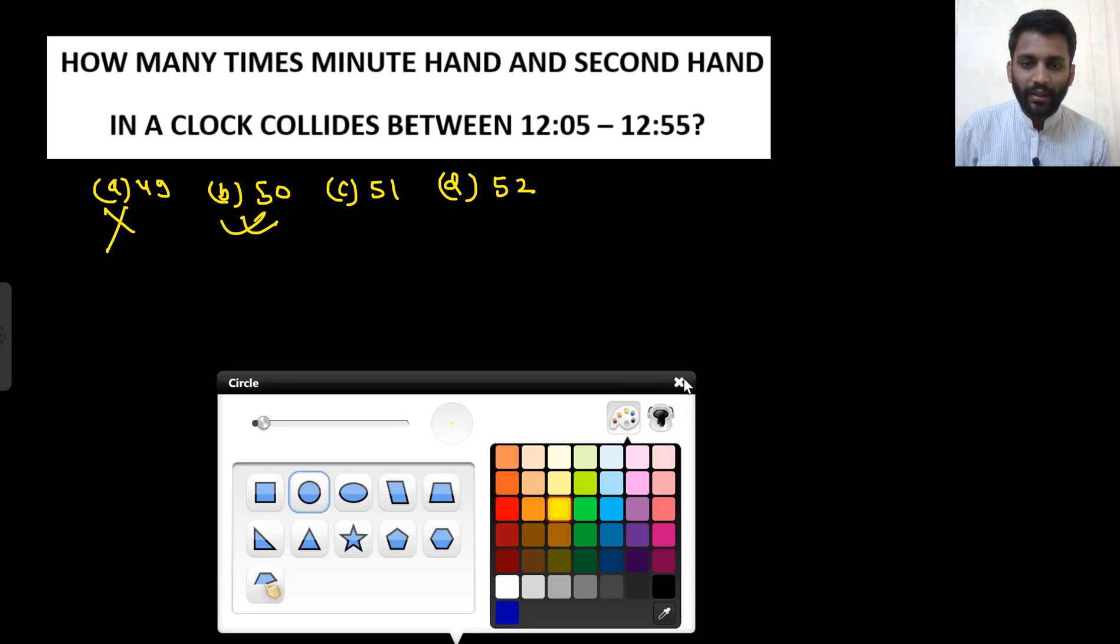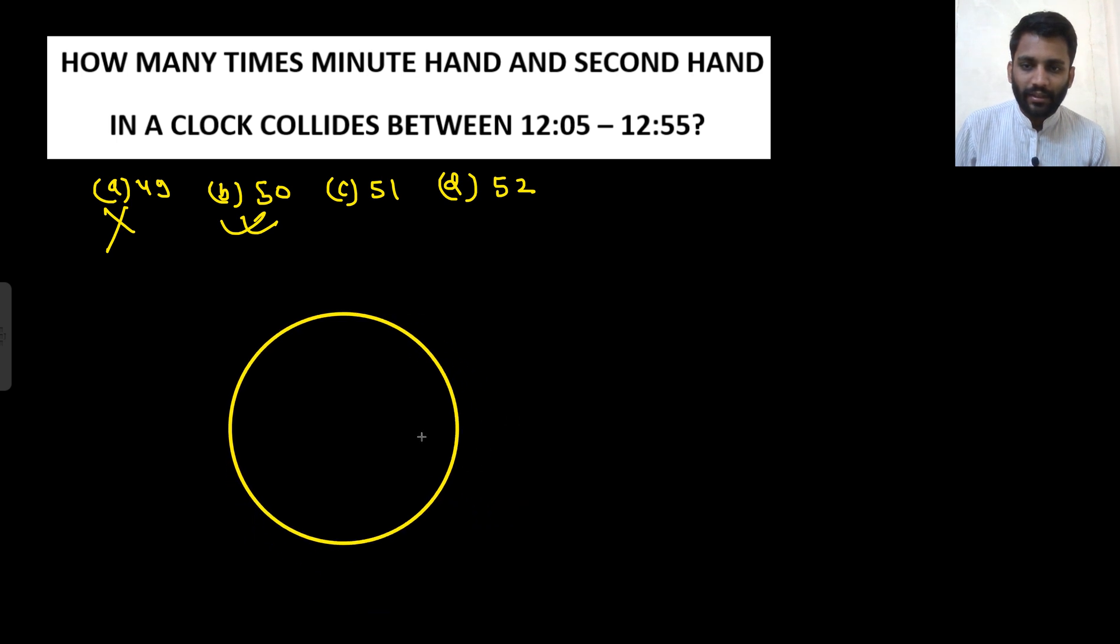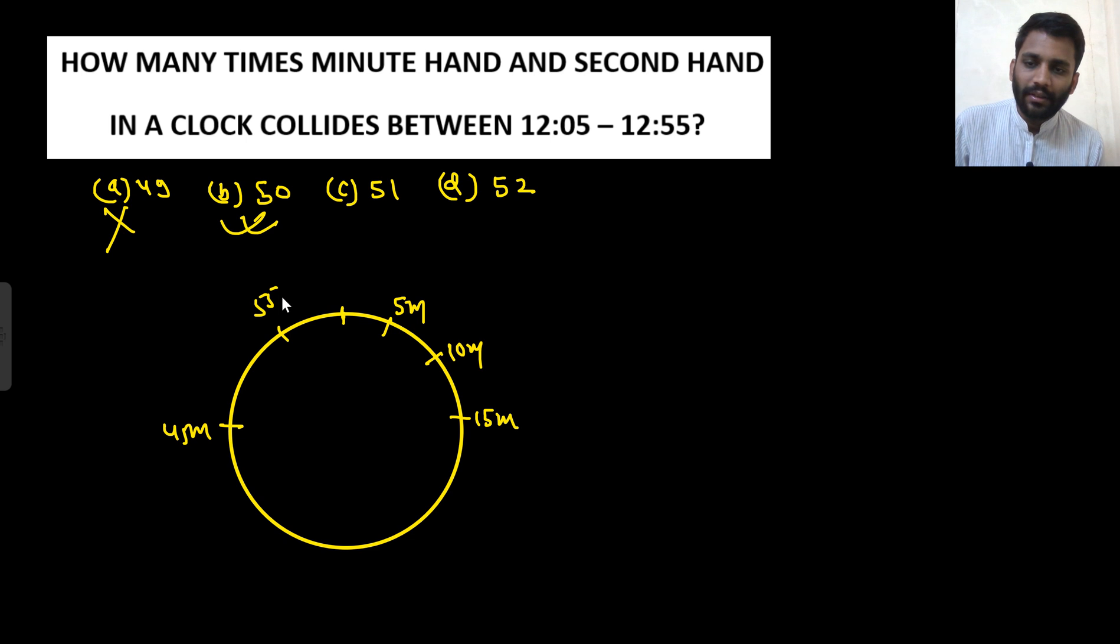Let's check how this happens. Let me make a clock and explain it. This is 5 minutes, this is 10 minutes, and so on. This is 15, this is 45 minutes, and this is 55 minutes. This is zero minutes, time is 12:05.